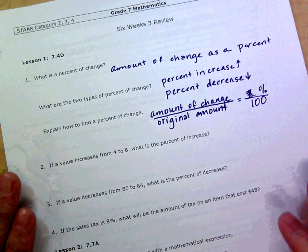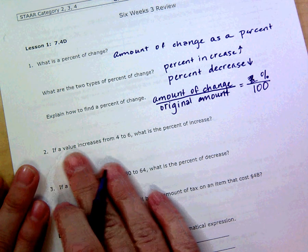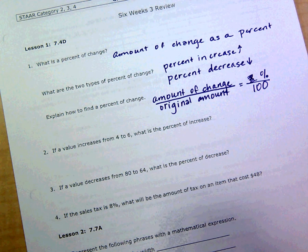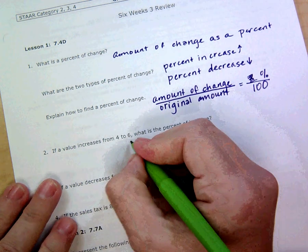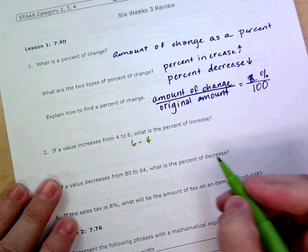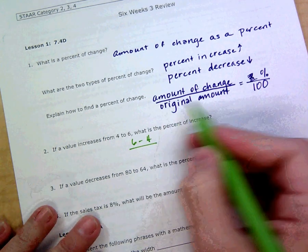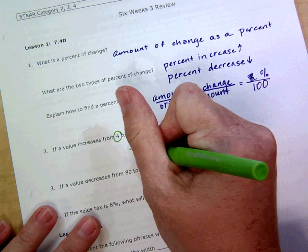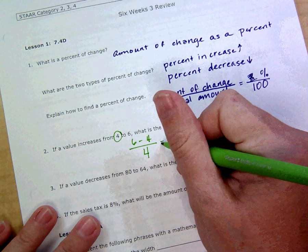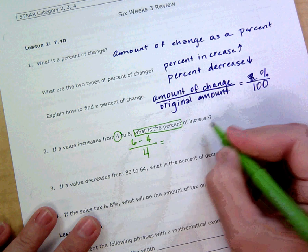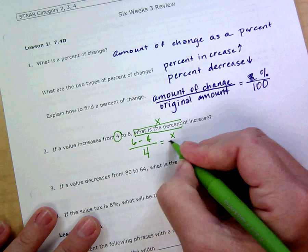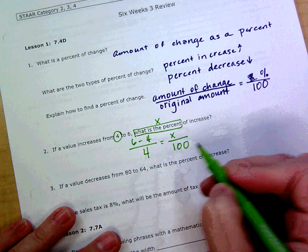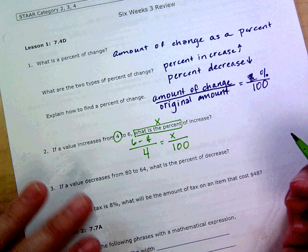Number two: if a value increases from four to six, what is the percent of increase? We're going to find our amount of change, that is six minus four. The original amount is what it was first, it was four, so we put that there. It's asking what is the percent, so that tells us that's our unknown, so x goes there over 100. I subtract and get 2 over 4, which is the same thing as 1 over 2.